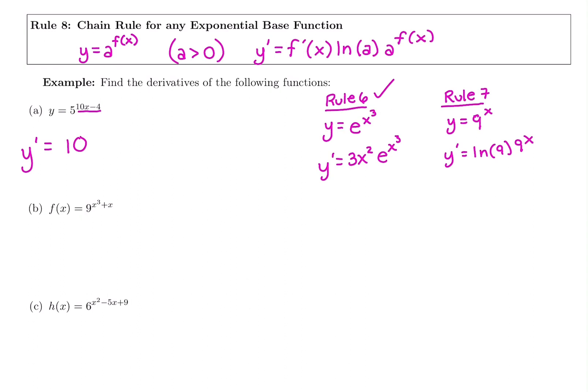But then rule 7 says if your base is not e, remember to take ln of your base. So we made it like rule 7. And then the last part of all exponentials is it has the answer having the original question in it, 5 to the 10x minus 4.